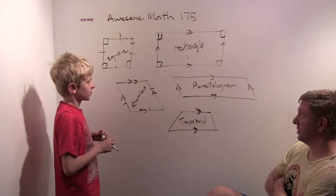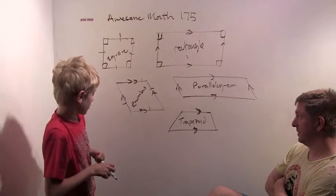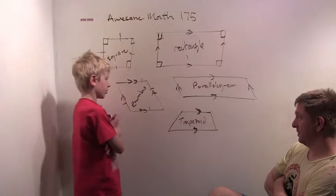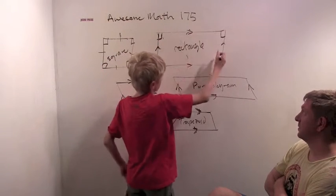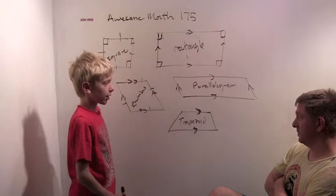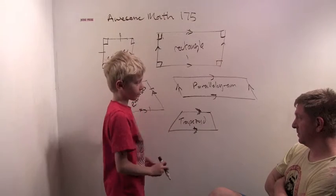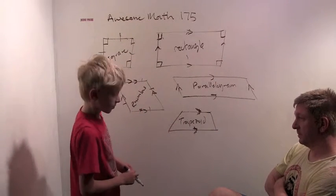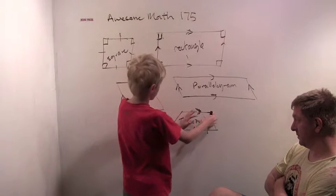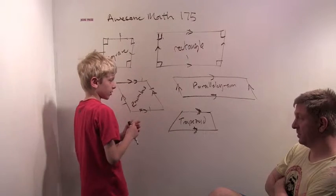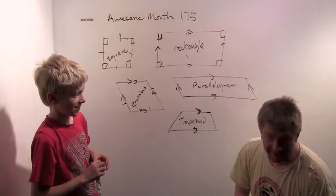How about this question: is a trapezoid always, sometimes, or never a rectangle? To be a rectangle, you have to have two sets of parallel lines, and a trapezoid only has one. But a trapezoid can sometimes have two — so sometimes. The judges confirm: a trapezoid is sometimes a rectangle.